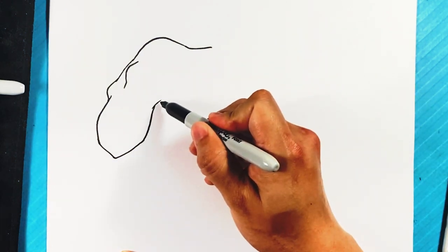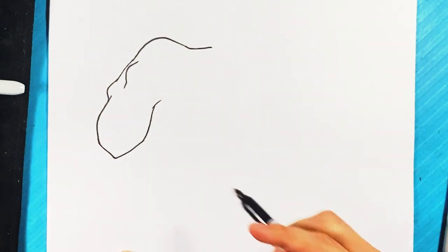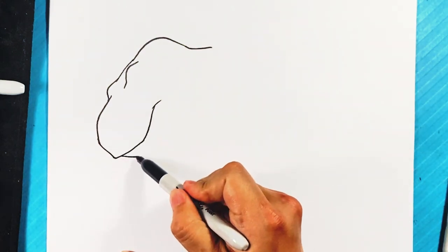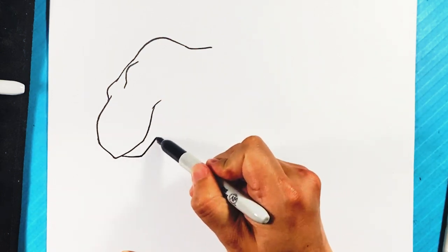Alright, and he's going to have like a closed mouth. So what I'm going to do is I'm going to pull a line right here for the bottom. Like the chin's going to go back over here.